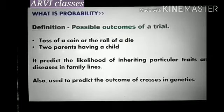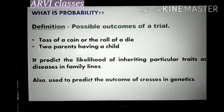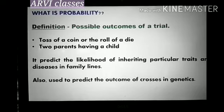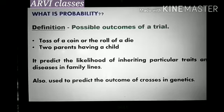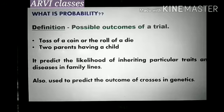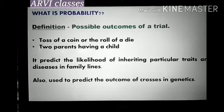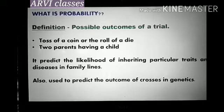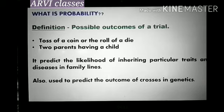First we should know what is probability. It is the possible outcome of a trial or an experiment. For example, the toss of a coin or rolling of a die. The tossing of a coin is a trial or experiment, and having head or tail is the event. Similarly, rolling of a die is a trial and getting a digit 1 to 6 is the event or outcome.